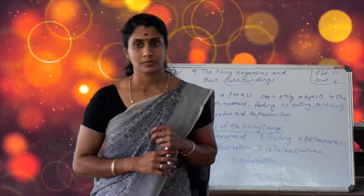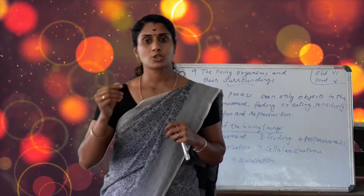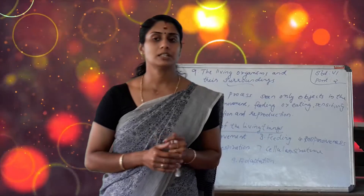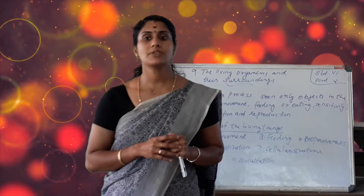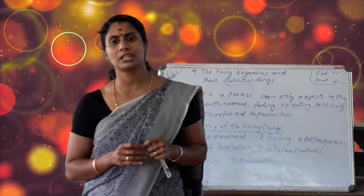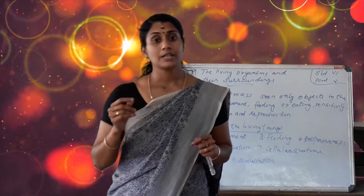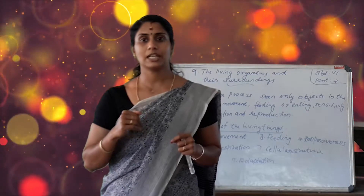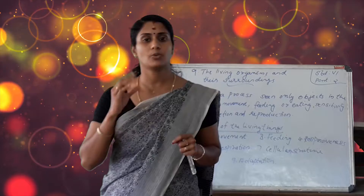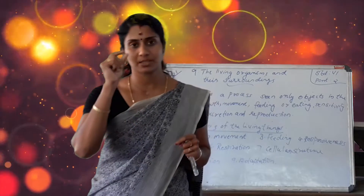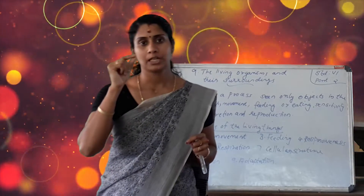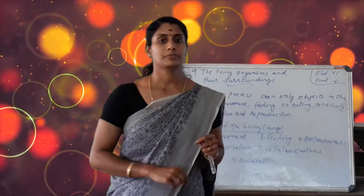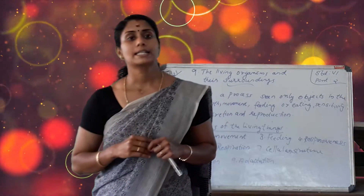Next is stomata. In desert plants, stomata are less in number. Leaves are either very small or converted into spines. These are the peculiarities of desert plants.